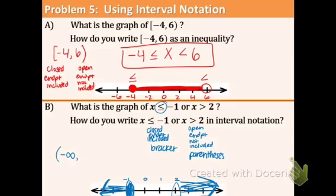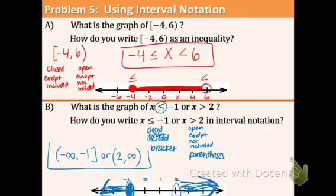Whenever you use infinity, use parentheses. The interval stops at negative one — bracket, including. Then write the word 'or,' starts at two — parenthesis, not including — and then continues to positive infinity with parentheses. So in interval notation: (-∞, -1] or (2, +∞). That is how you write that interval in interval notation.